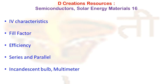Welcome to Decreation's resources. Let us talk about two more characteristics, namely the fill factor, also abbreviated as FF, and the efficiency. Fill factor is a parameter which is in conjunction with VOC and ISC, which we just spoke about in the previous segment, and that determines the maximum power from a solar cell.